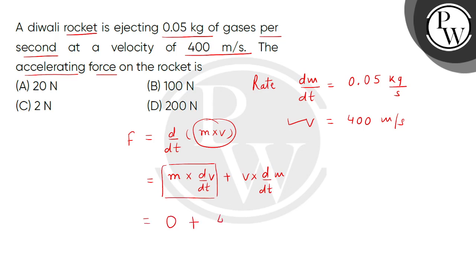In the second term, we put the values: 400 × 0.05. We get the accelerating force on the rocket as 20 newtons. The correct answer is option A. Thank you.